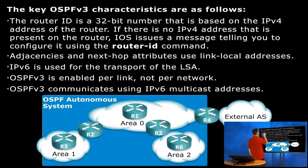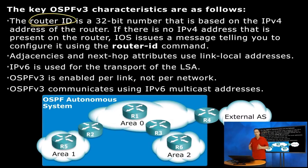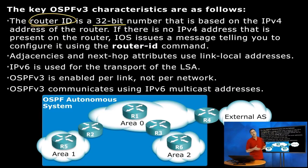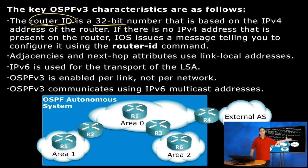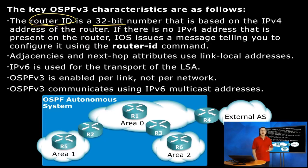Some characteristics we need to know for OSPFv3: we still need a router ID, just like with OSPFv2. Are we going to use an IPv6 address as a router ID? No — we're still going to use a 32-bit number. The router ID for OSPFv3 is going to look, feel, taste, and smell like an IPv4 address — a 32-bit number in dotted decimal notation.